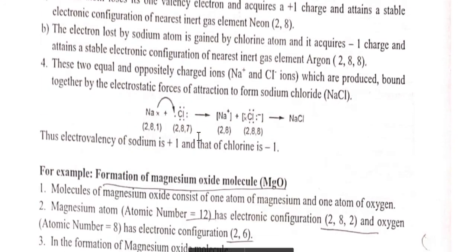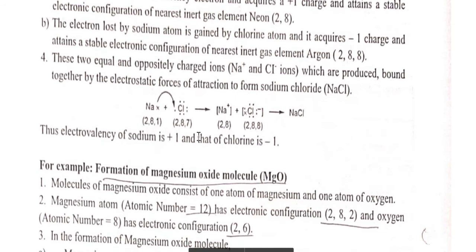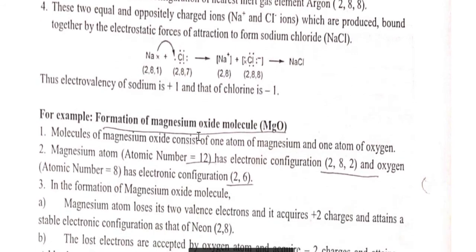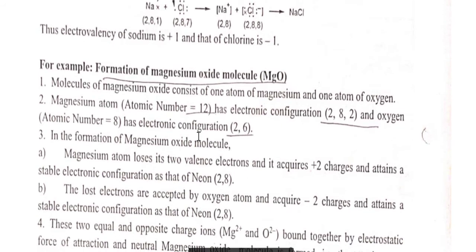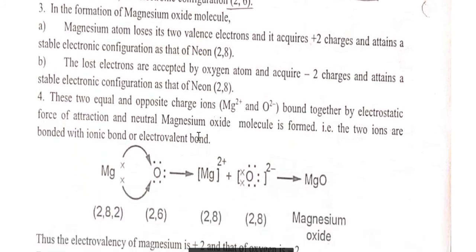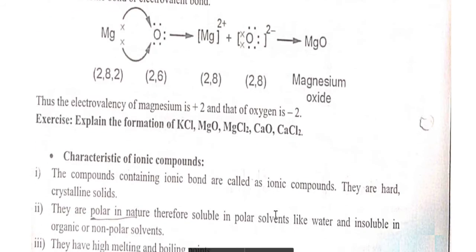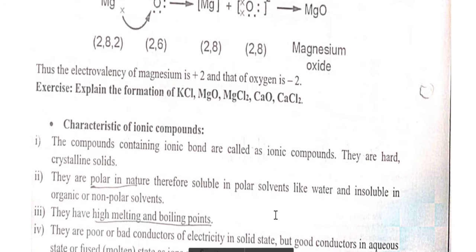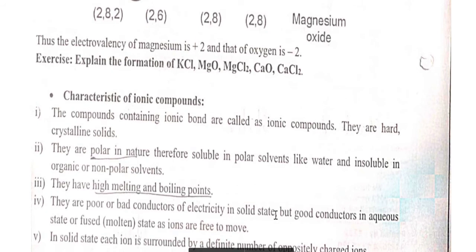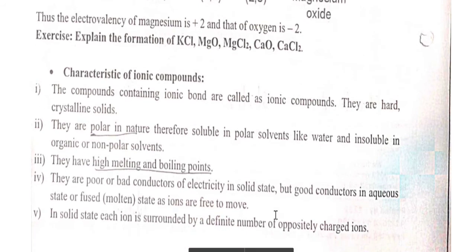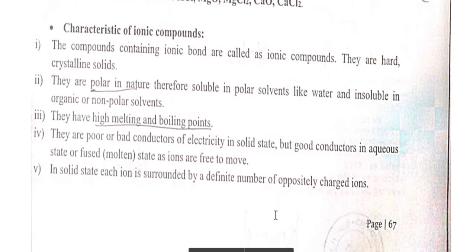The second example is formation of magnesium oxide (MgO). Magnesium has atomic number 12 and oxygen has atomic number 8. Magnesium loses 2 electrons and oxygen gains 2 electrons to form neutral MgO. Other examples of ionic bonds are KCl, MgO, MgCl2, CaO, and CaCl2. Properties of ionic bonds: they are polar in nature and have high melting point and boiling point.